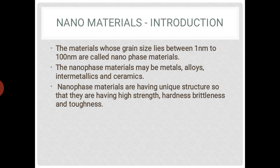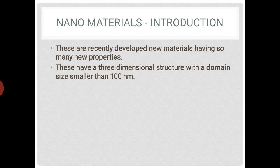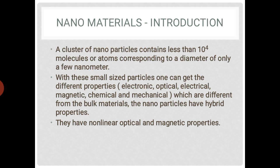These materials can be metals, alloys, intermetallics, or ceramics. They have a unique structure, and nanomaterials possess high strength, hardness, brittleness, and toughness. They are recently developed materials with a three-dimensional structure with domain size smaller than 100 nanometers. A cluster of nanoparticles contains less than 10 to the power minus 4 molecules or atoms, corresponding only to a diameter of few nanometers.